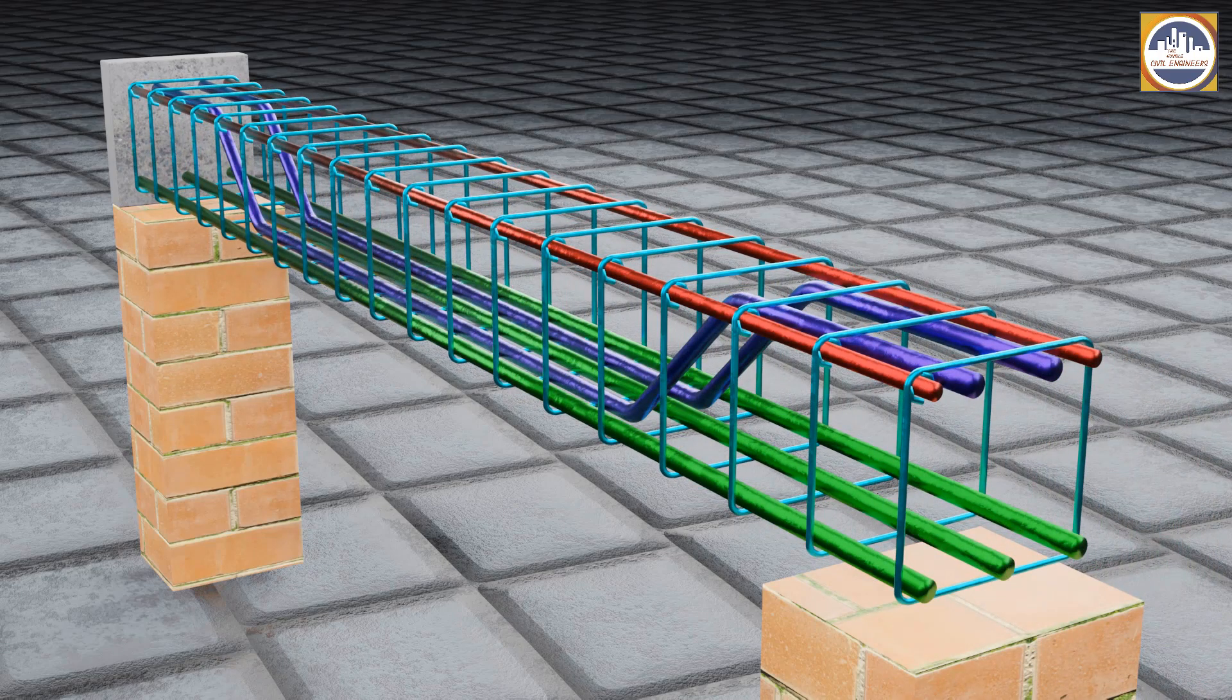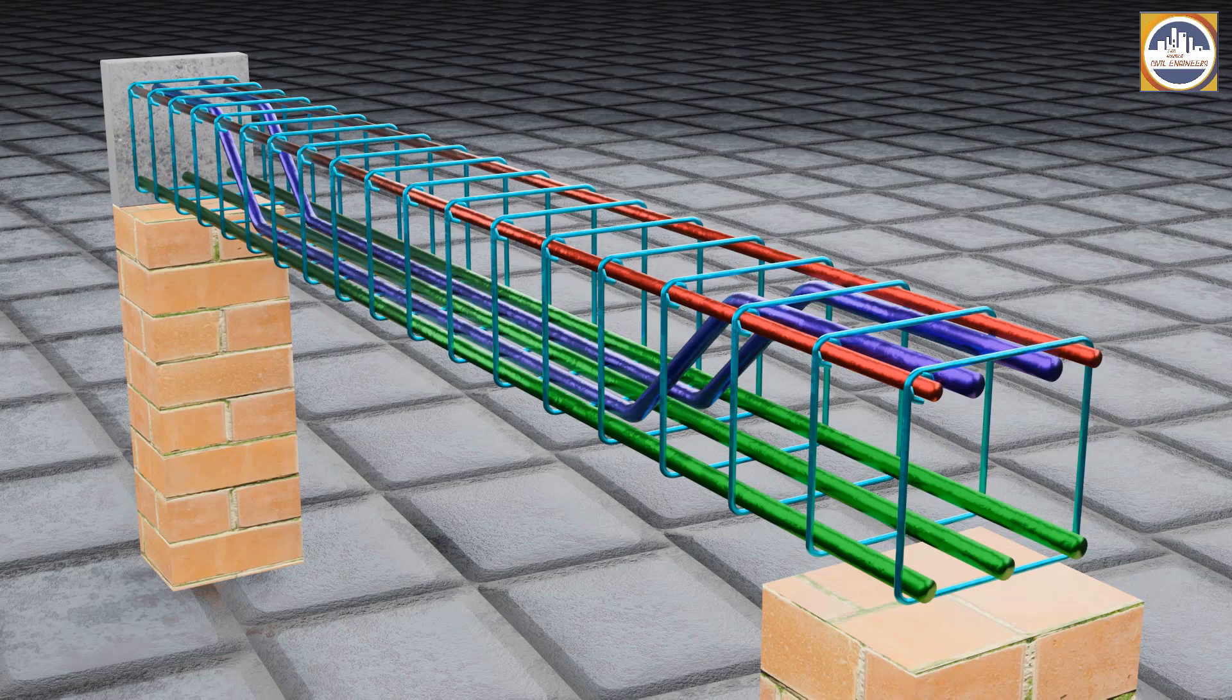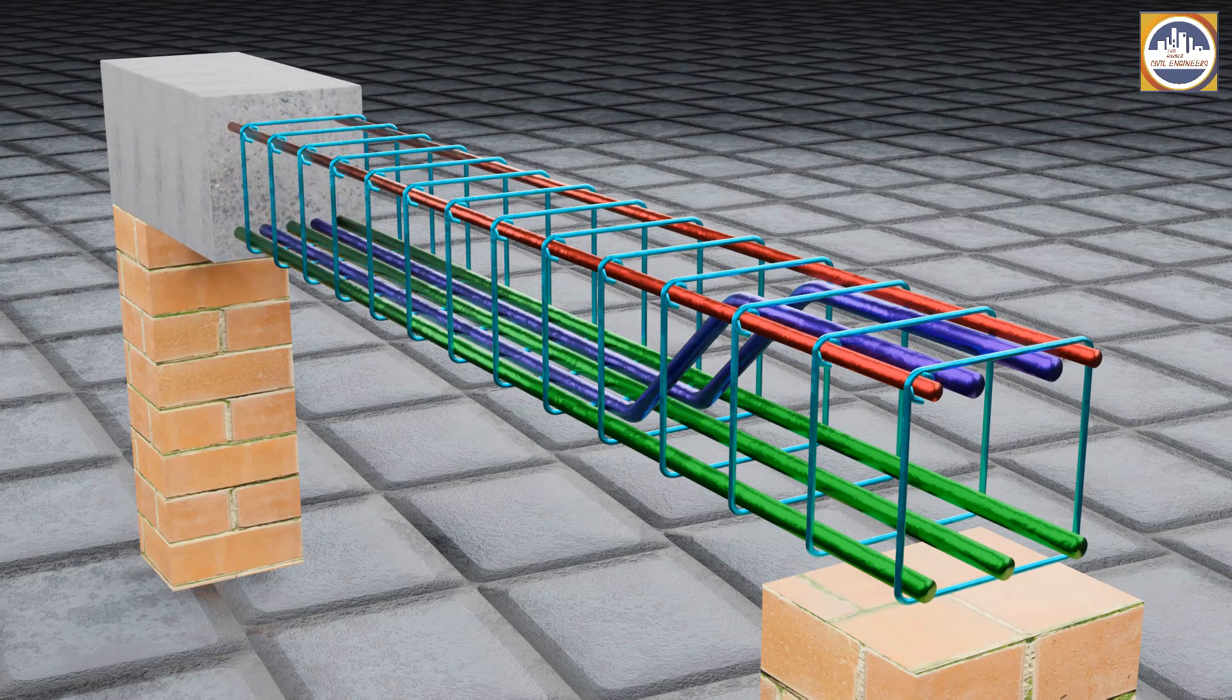And finally, these sky blue color bars in the beam are called as stirrups and those are provided along the lengthwise of the beam which will be taking care of the shear which will be produced in the beam.